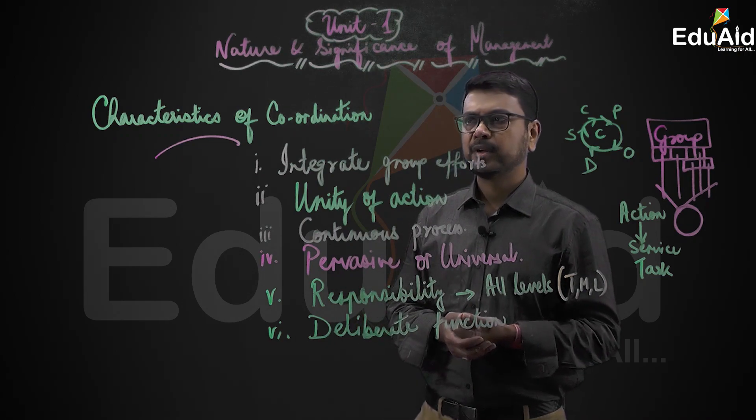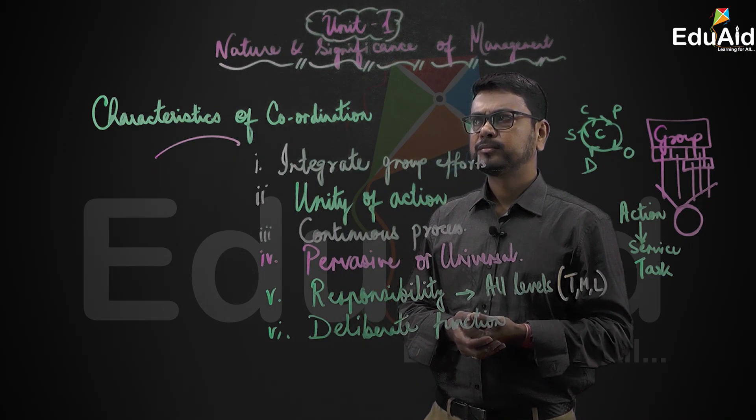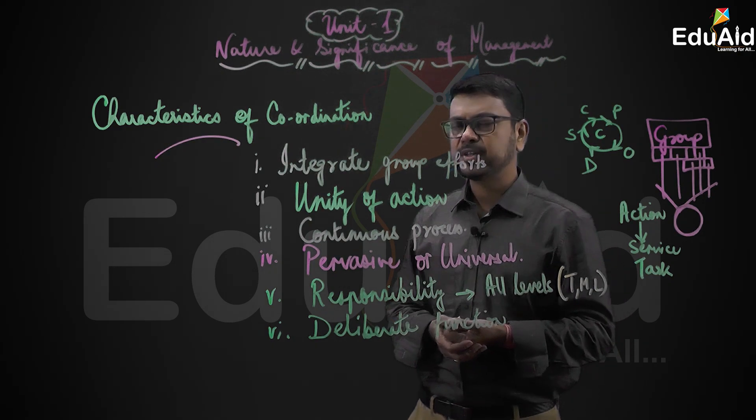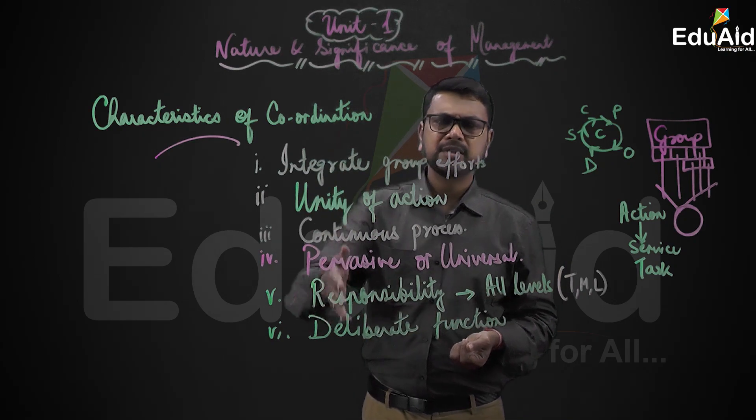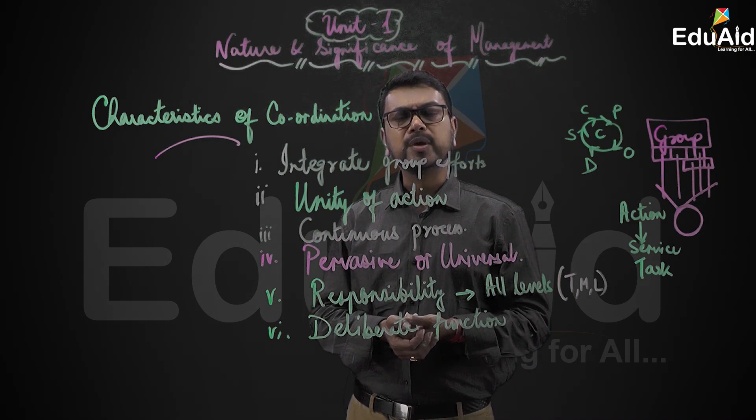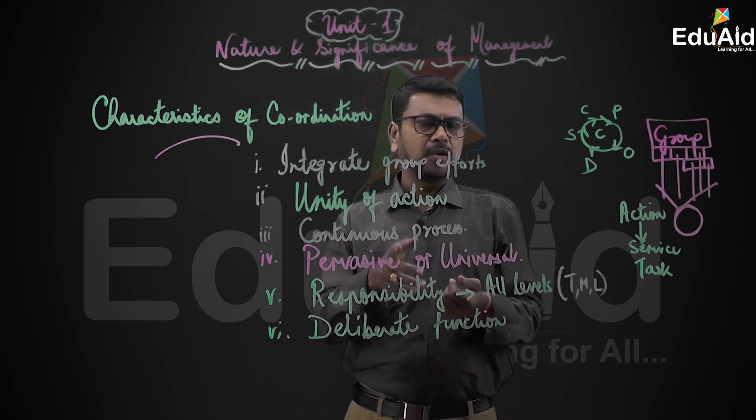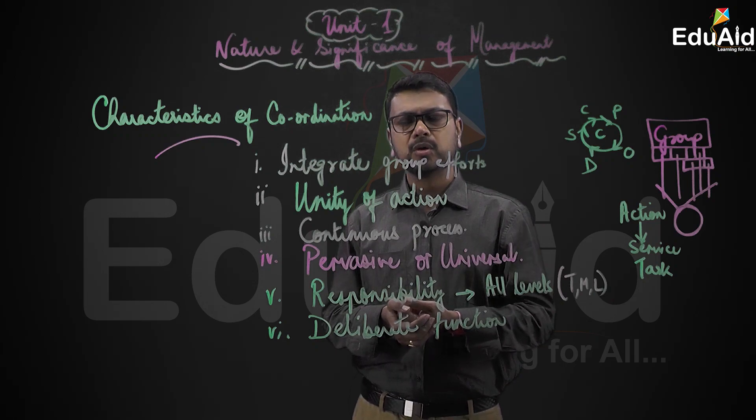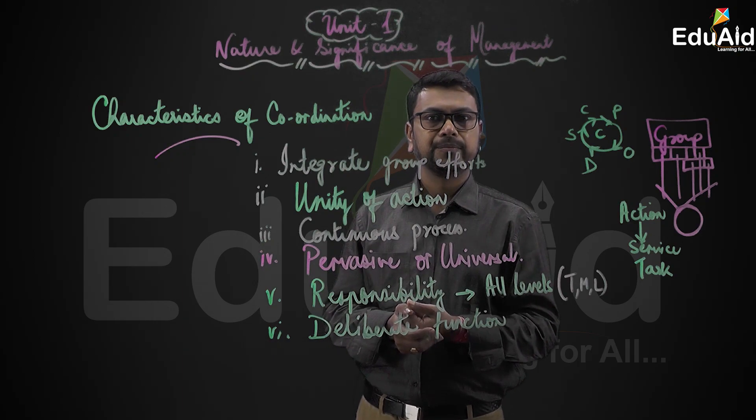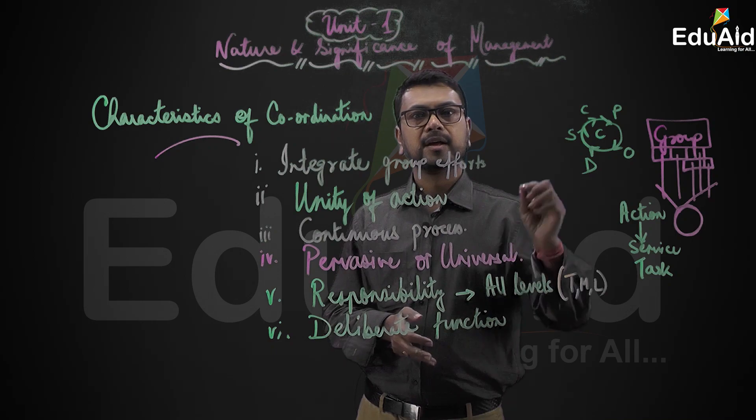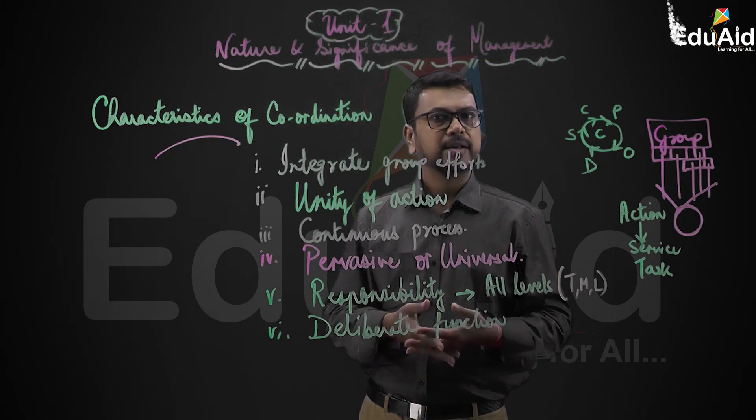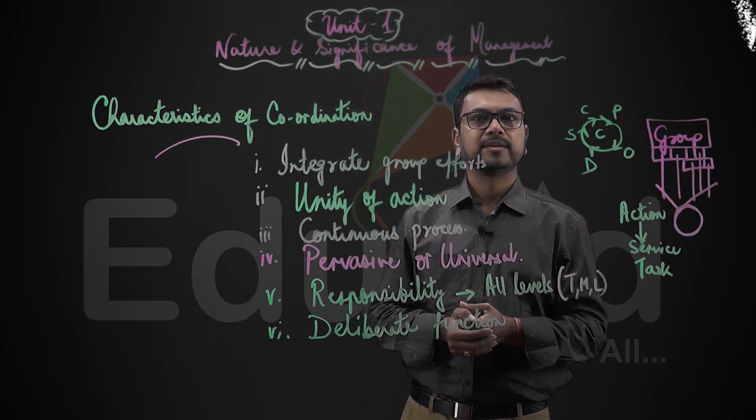Okay students, let's take down a few questions. First question is: Explain the various characteristics of coordination. That is the first question. The second question could be short questions. What do you mean by integrating group efforts? Or coordination helps in unity of action, true or false? Explain. So if it is false, you explain why it is. If it is true, how unity of action is achieved through coordination. In one or two sentences you will have to explain. Coordination is pervasive or universal. Explain. Similarly for all the other characteristics. Thank you.